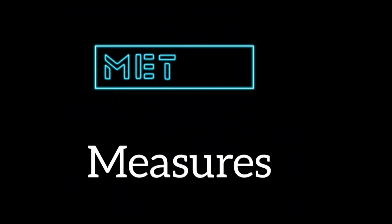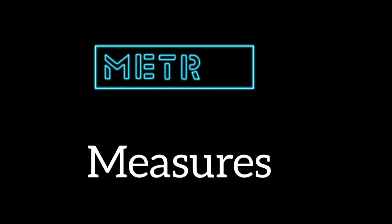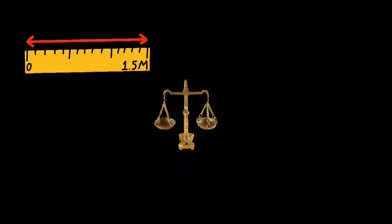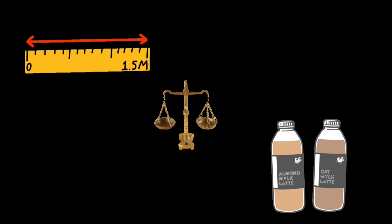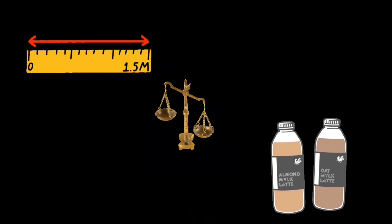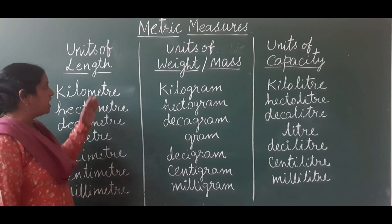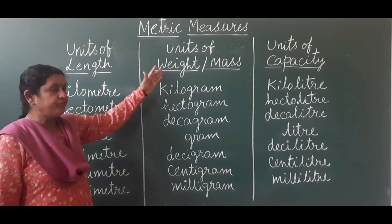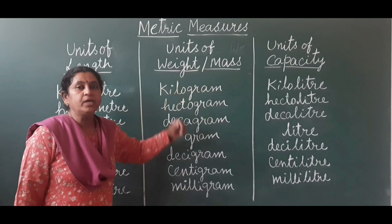Now, Metric Measures. The metric system of measurement, which is used all over the world, is based on the decimal system. The three basic units used in this system are: meter for length, gram for weight, and liter for capacity. We will discuss units of length, units of weight or mass, and units of capacity in detail.